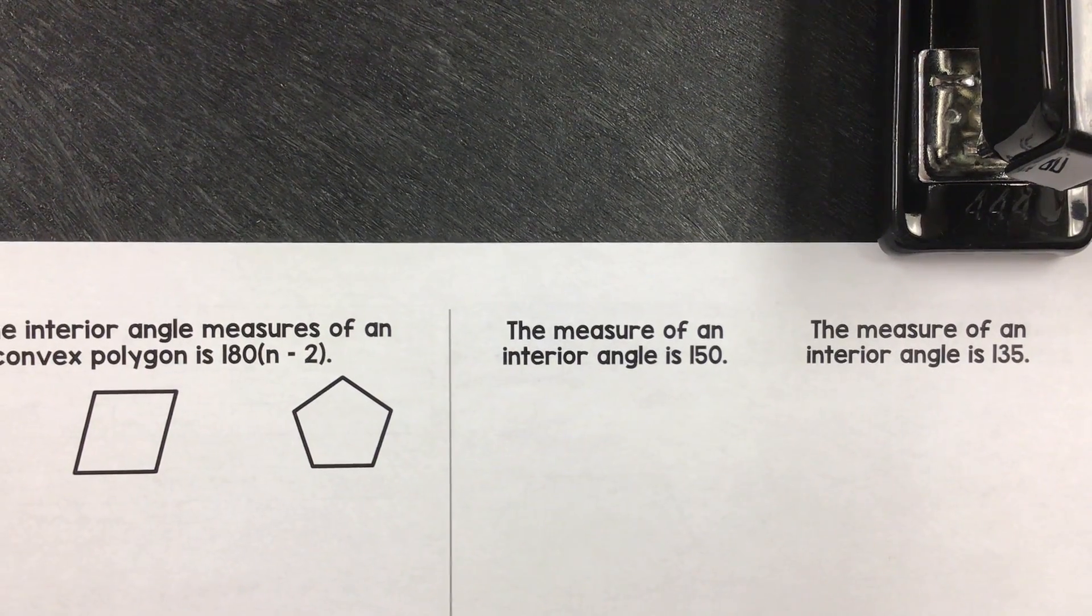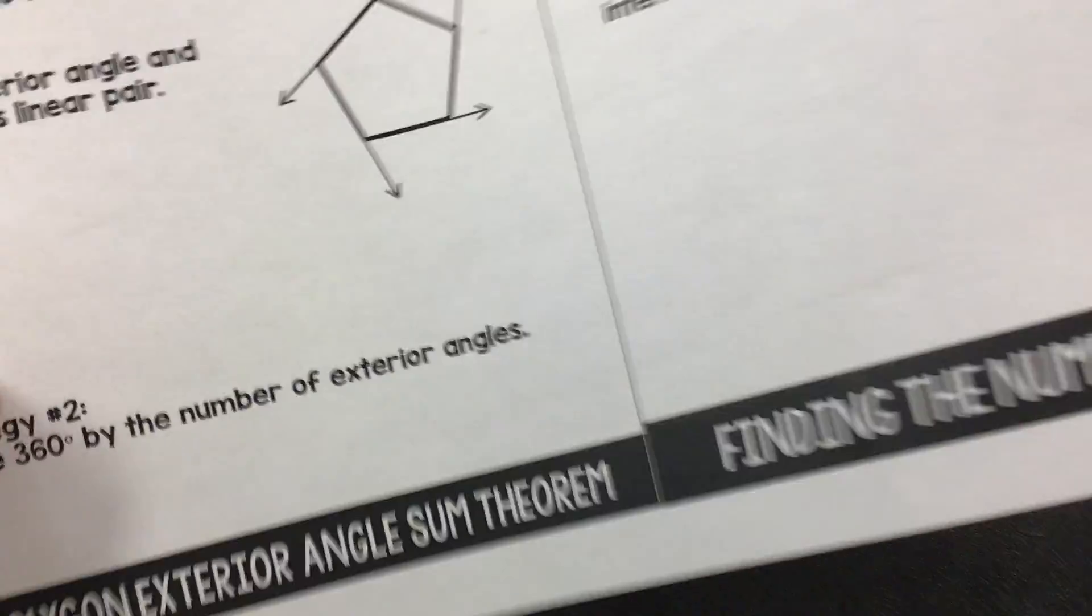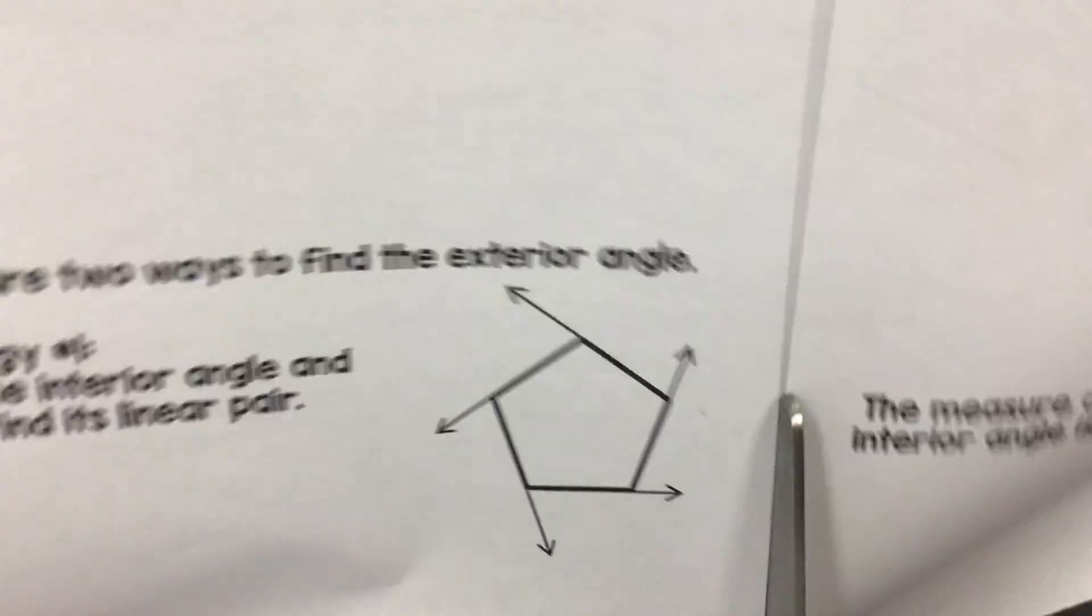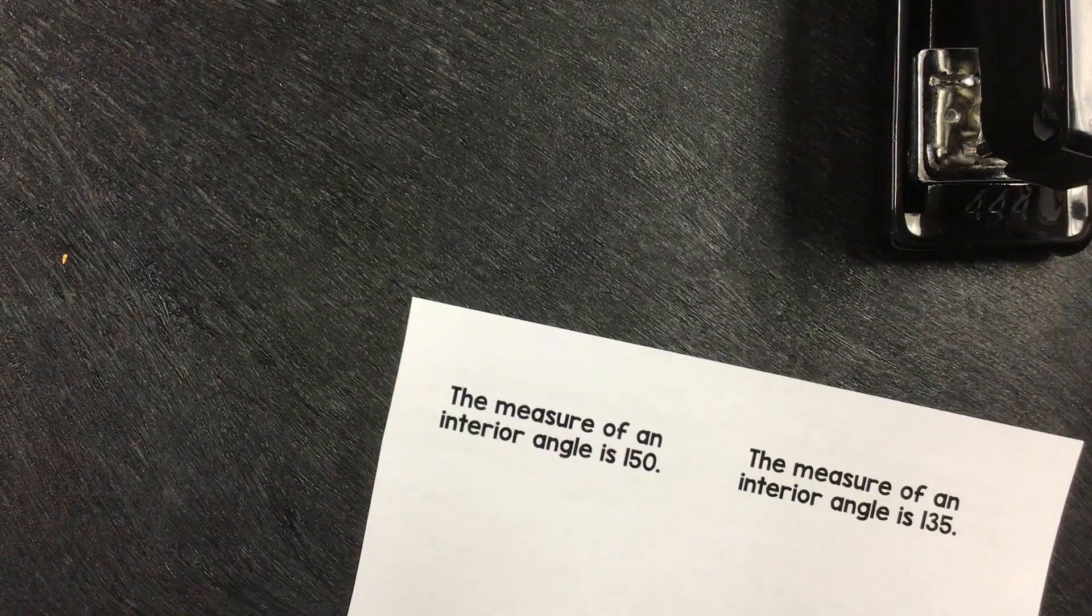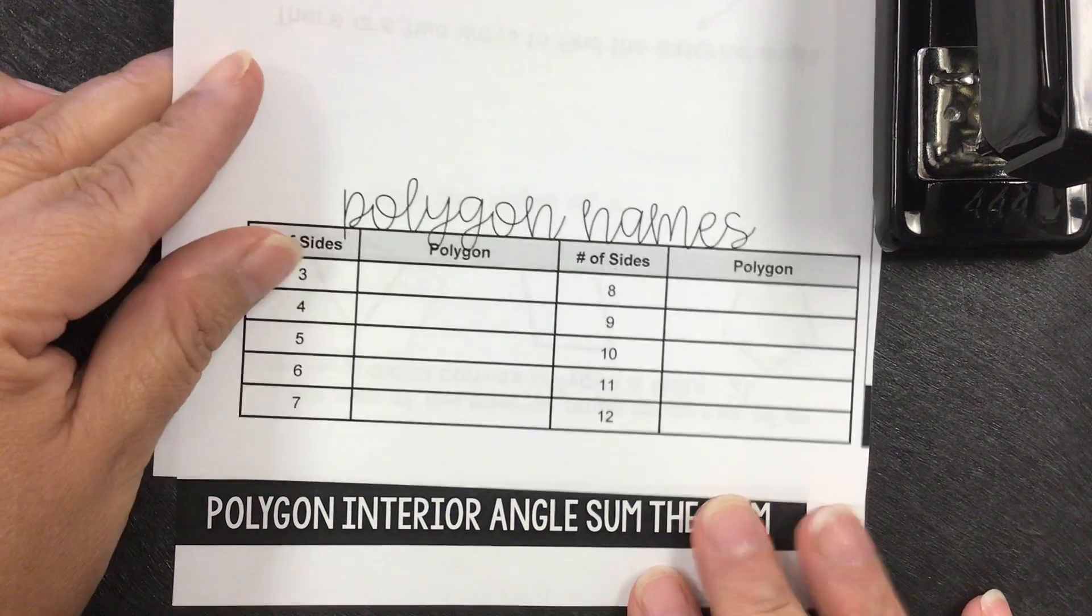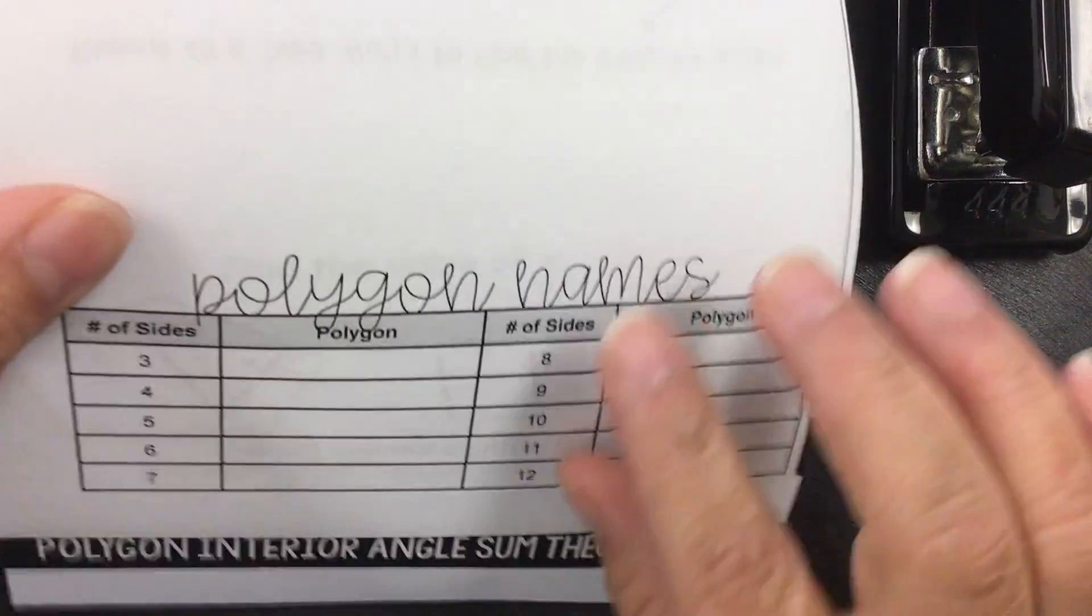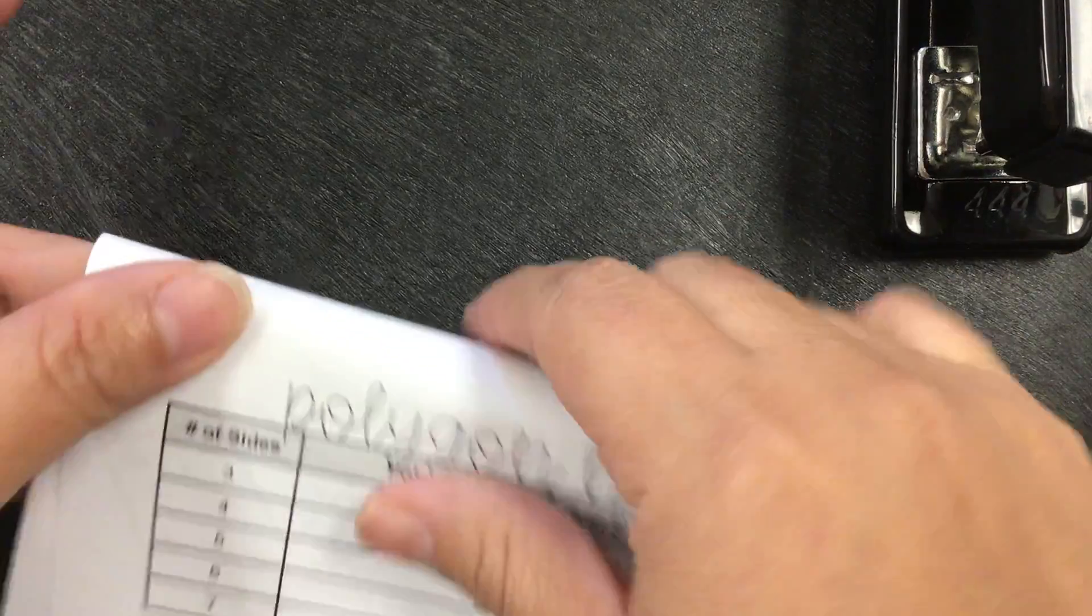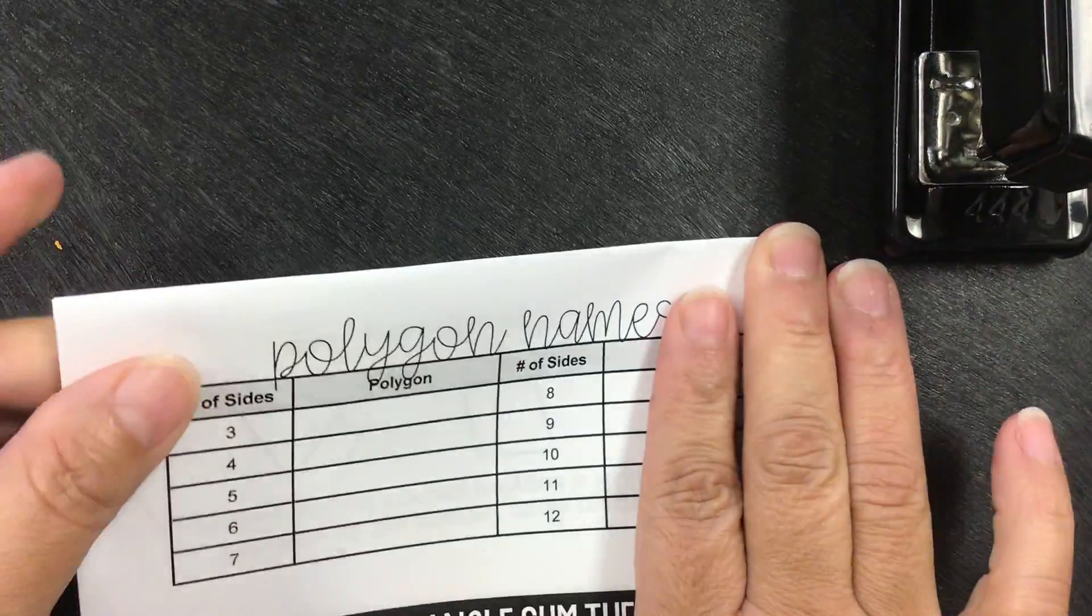This is the foldable for section 6.1. Once you print it off, what you have to do is cut on the middle. You're gonna put this side on the bottom first so this faces up, and then you put this on the top. You try to line them up with this line right here. You fold it back so you can see all the tabs and you staple it at the top.